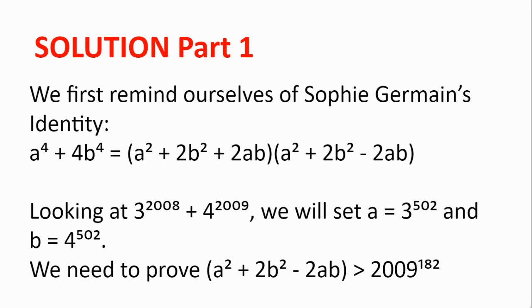So it's enough to prove that a squared plus 2b squared minus 2ab is greater than 2009 to the power of 182 since the second bracket is larger.